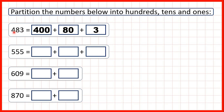Also notice that after the 4 in this number we have two digits, so when we partition, after the 4 we have two zeros. After the 8 in our number we have one digit, so when we partition, after the 8 we have one zero.